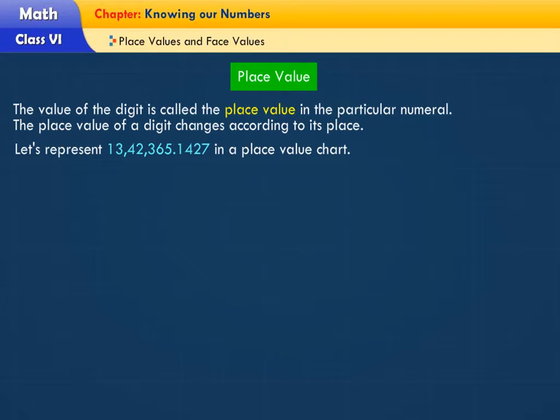Let's represent 13,42,365,1427 in a place value chart.